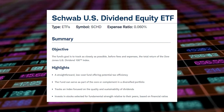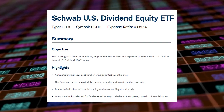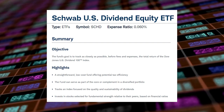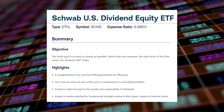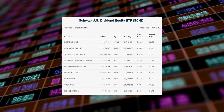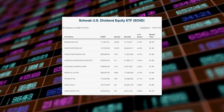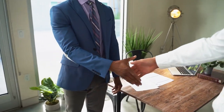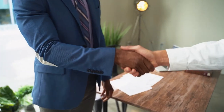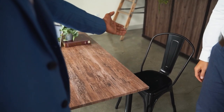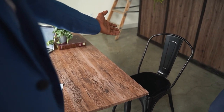The SCHD Schwab U.S. Dividend Equity ETF is designed to track the performance of the Dow Jones U.S. Dividend 100 Index. This index includes 100 high dividend yielding U.S. stocks that have a consistent history of paying dividends. The ETF's objective is to provide investors with a diversified portfolio of U.S. stocks that pay consistent dividends and that also have a history of raising their dividends over time.